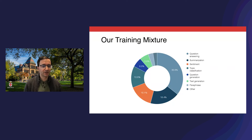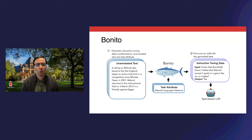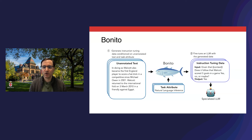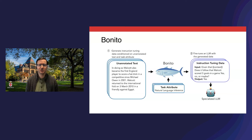The types of tasks range from question answering and generation to summarization and topic classification. With this training data, we create an LLM we call Bonito — a fine-tuned variant of Mistral 7 billion. Bonito takes in unannotated text, like an article on sports, along with an attribute telling it what kind of task to generate. In this case, we're asking for a natural language inference task. Bonito then produces an instruction that refers to the context — for example, a specific question about the sports article requiring inference based on the knowledge that three goals is a hat trick. We use Bonito to generate large specialized datasets for instruction tuning this way.